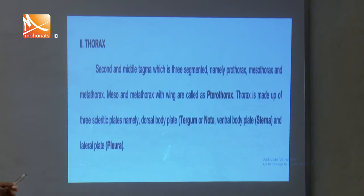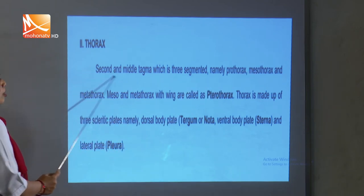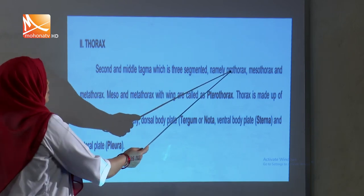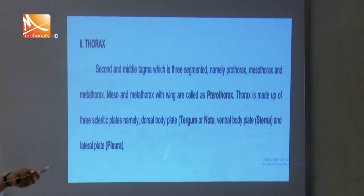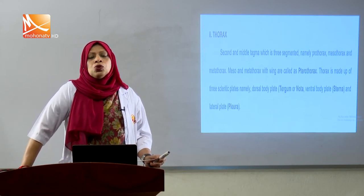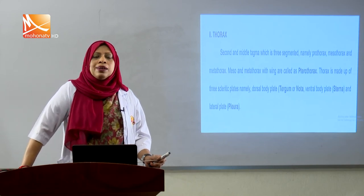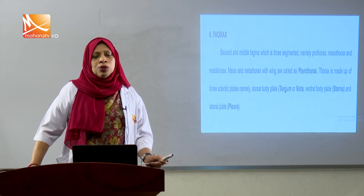The thorax is the second tagma of the Grasshopper body. It is made up of three segments: prothorax, mesothorax, and metathorax. The dorsal part is known as the tergum, ventral part as the sternum, and lateral part as the pleura. In the thoracic region there are two pairs of spiracles through which air enters for respiration. There are also three pairs of legs and two pairs of wings present in the thoracic region.